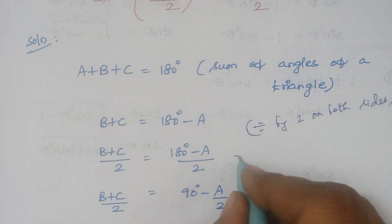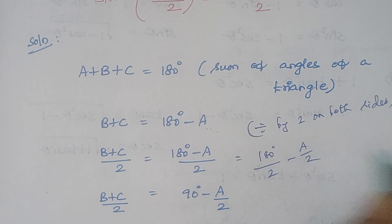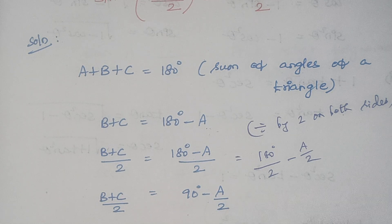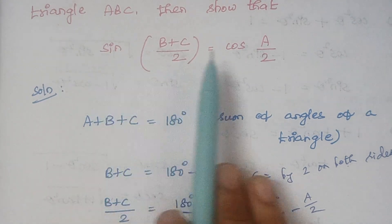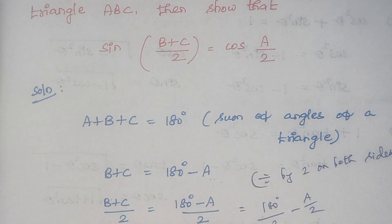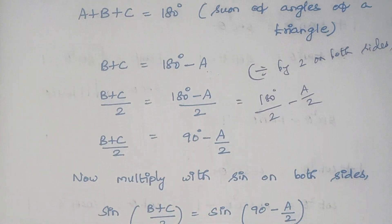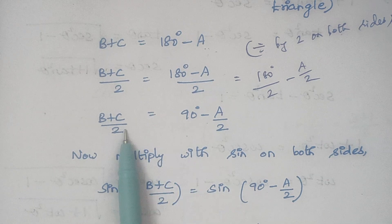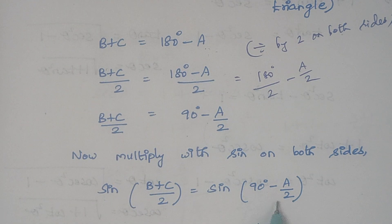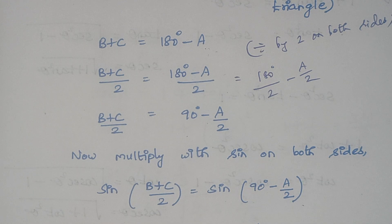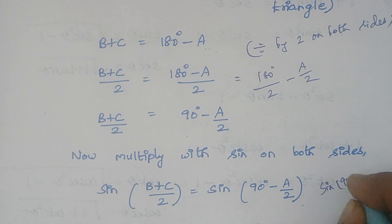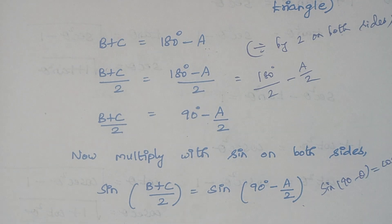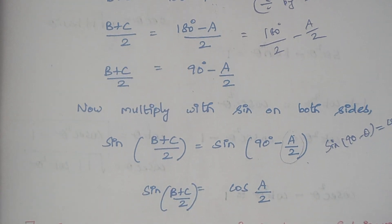We can split this as 180 divided by 2 minus A divided by 2, which simplifies to 90 minus A over 2. In the problem we have a sine term and a cosine term; I apply sine to both sides. This gives sine((B plus C)/2) equals sine(90 minus A/2). Using the identity sine(90 minus theta) equals cosine theta, with theta equal to A over 2, we get sine(90 minus A/2) equals cosine(A/2).